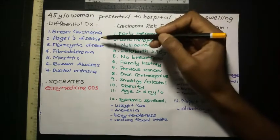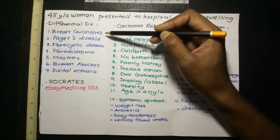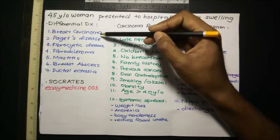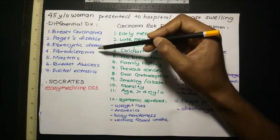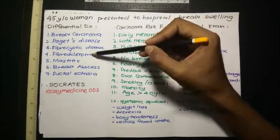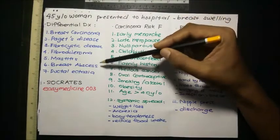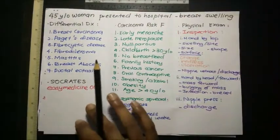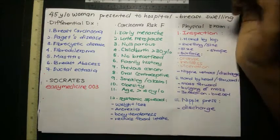There are seven common breast pathologies. The first is breast carcinoma — in all patients we need to rule out breast carcinoma. The second is Paget's disease, which is usually associated with carcinoma. Next is fibrocystic breast disease, then fibroadenoma, mastitis, breast abscess, and finally ductal ectasia, which is common in menopausal women.